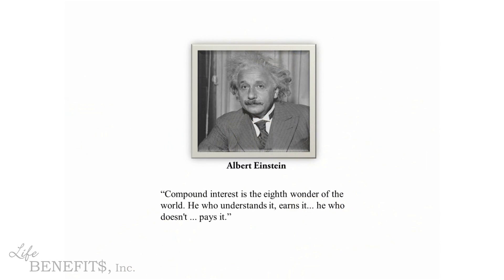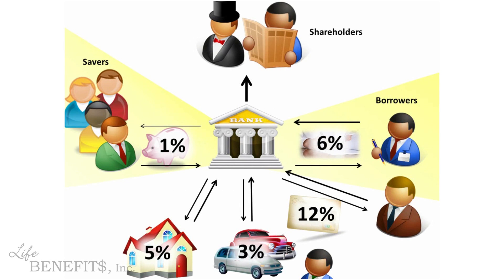Let's go back to Albert Einstein's quote: compound interest is the eighth wonder of the world — he who understands it earns it, and he who doesn't pays it. Have you been paying compound interest, or are you earning it? If you've been paying it, now that you understand what compound interest is, don't you think it's time you started earning some? Right now, chances are you're both a saver earning 1% and a borrower paying interest on business loans, credit cards, cars, or a house — while the bank gives the profits to its shareholders. The solution is obvious: you should become the bank, and make the profits the banks are currently making on you.